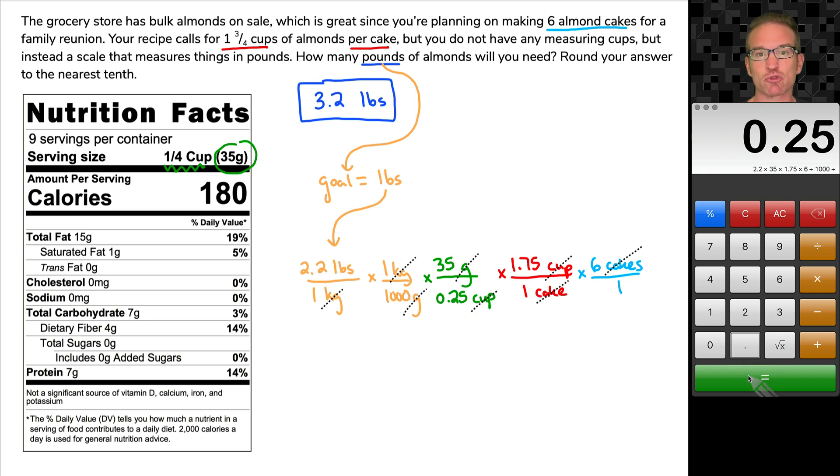And what I want you to realize is I'm truly only pressing equals one time after multiplying all of the top numbers, dividing by those bottom numbers. And does that look familiar? Exact, exact same answer.